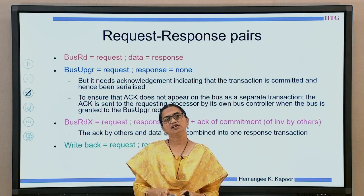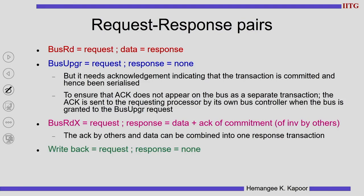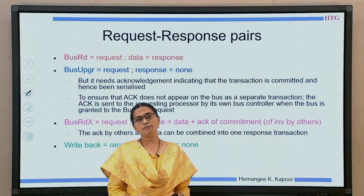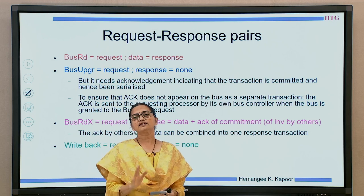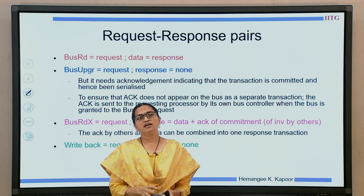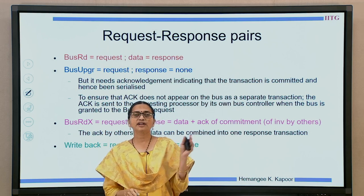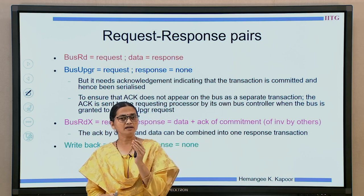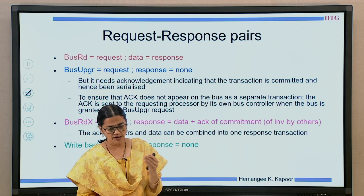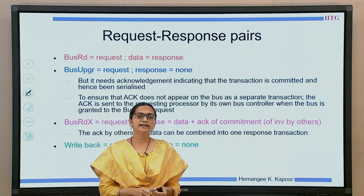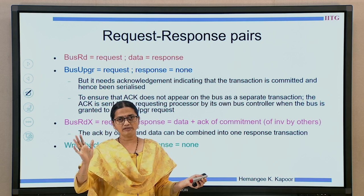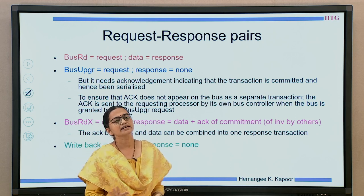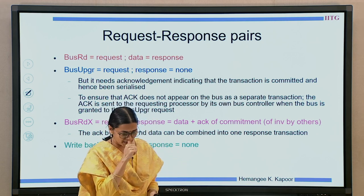The first transaction is the bus read. Bus read is sent by a processor that wants to read a block. When that transaction goes onto the bus, the bus read is the request and the response is the data — you get data in return. The data could be sent by a cache or by memory.